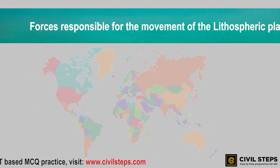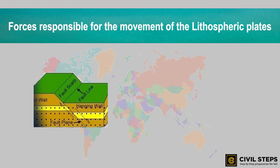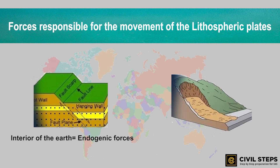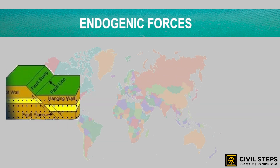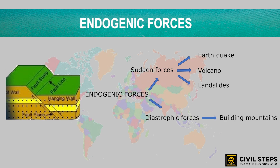The forces which act in the interior of the earth are called endogenic forces, whereas the forces that work on the surface of the earth are called exogenic forces. Endogenic forces are further classified into sudden forces and diastrophic forces. Examples of sudden forces include earthquakes, volcanoes, and landslides, whereas diastrophic forces include the building of mountains.